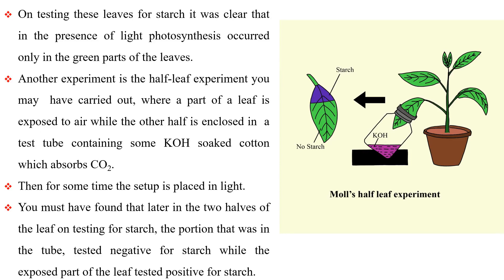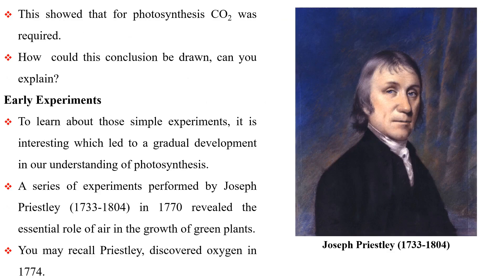Another experiment is the half-leaf experiment, where a part of a leaf is exposed to air while the other half is enclosed in a test tube containing potassium hydroxide-soaked cotton, which absorbs carbon dioxide. The setup is then placed in light for some time. You must have found that on testing for starch in the two halves of the leaf, the portion that was in the test tube tested negative for starch, while the exposed part of the leaf tested positive for starch. This showed that carbon dioxide was required for photosynthesis.